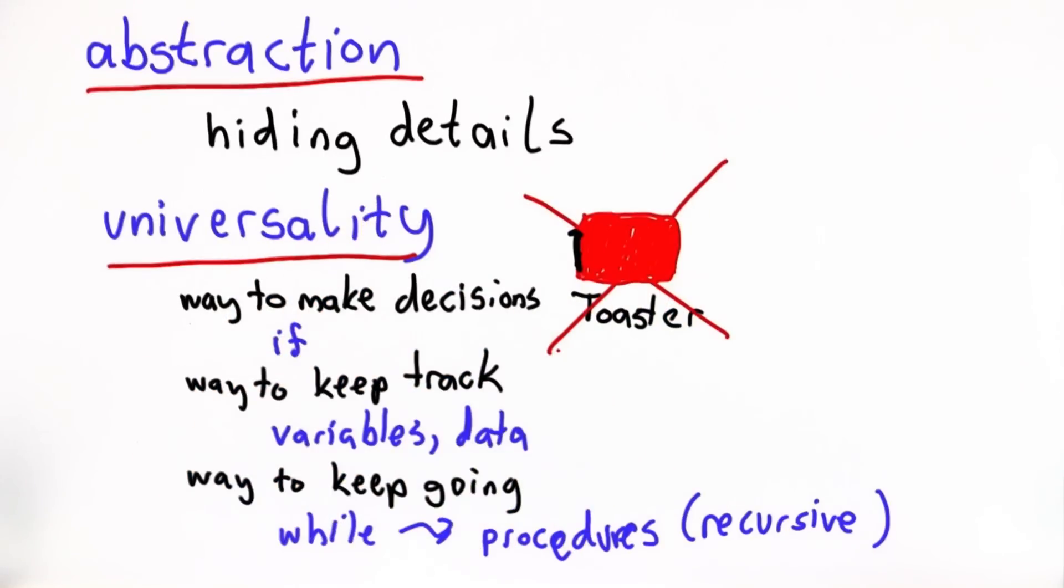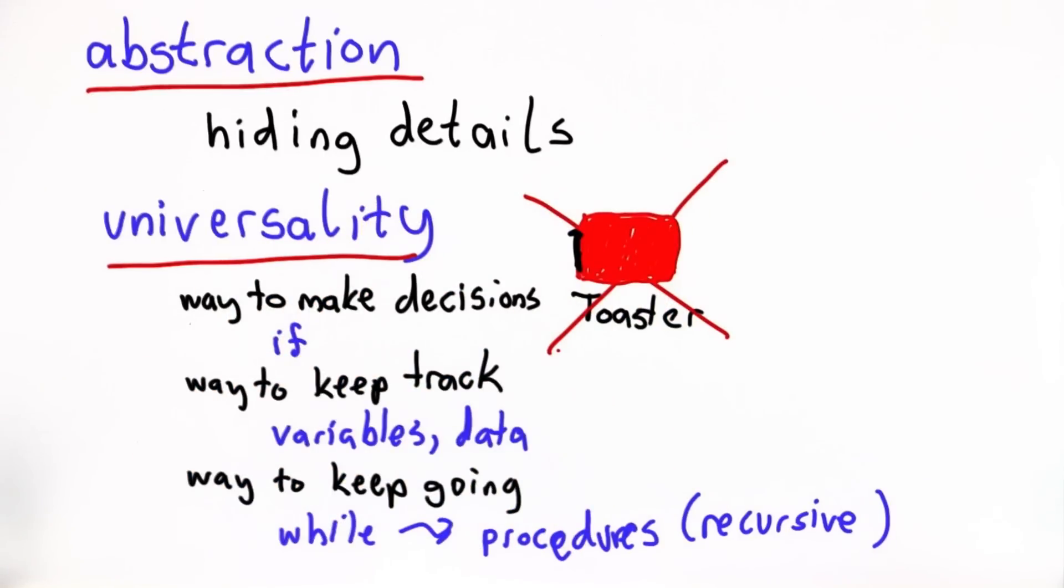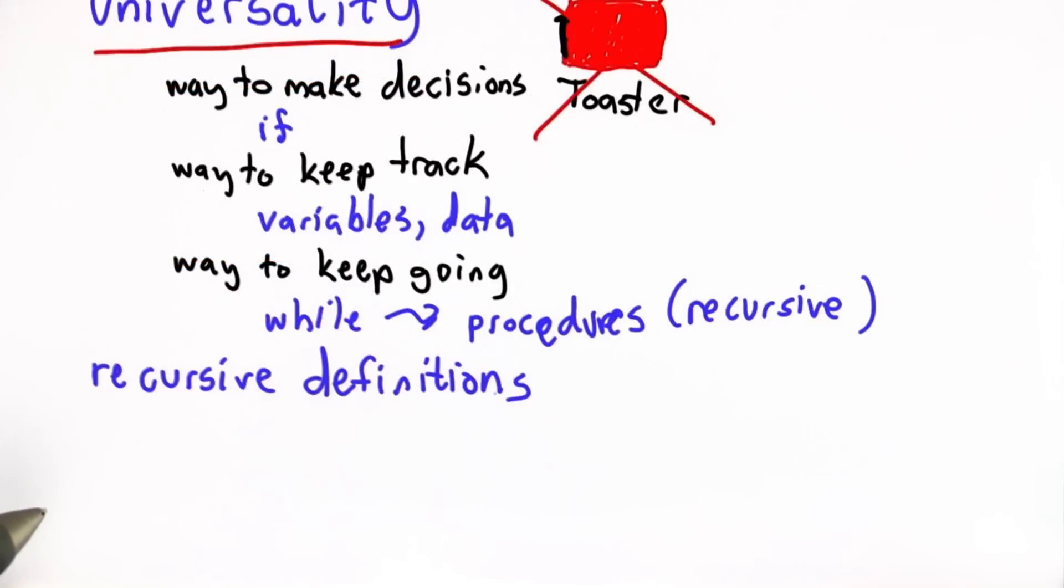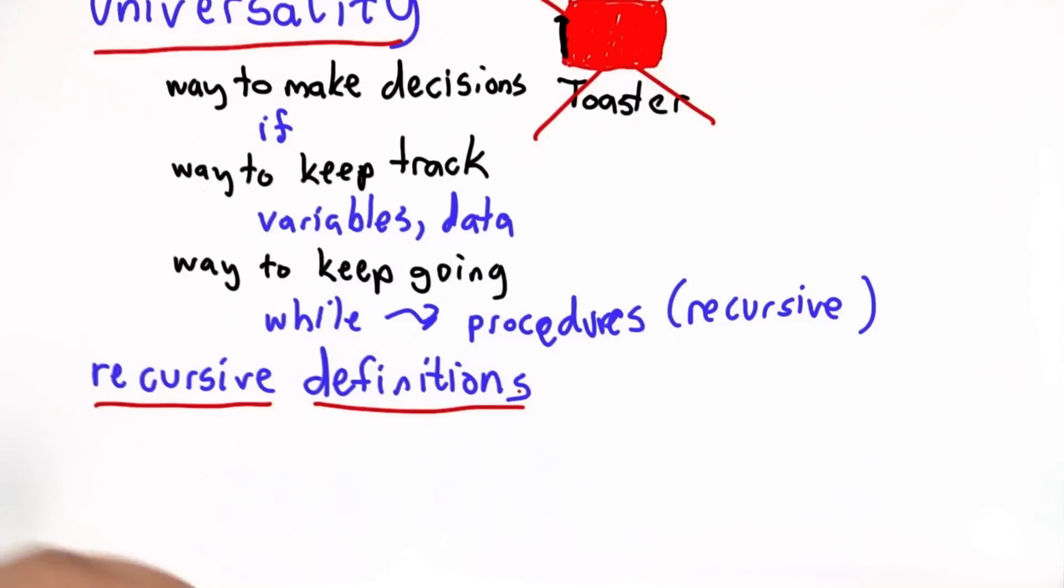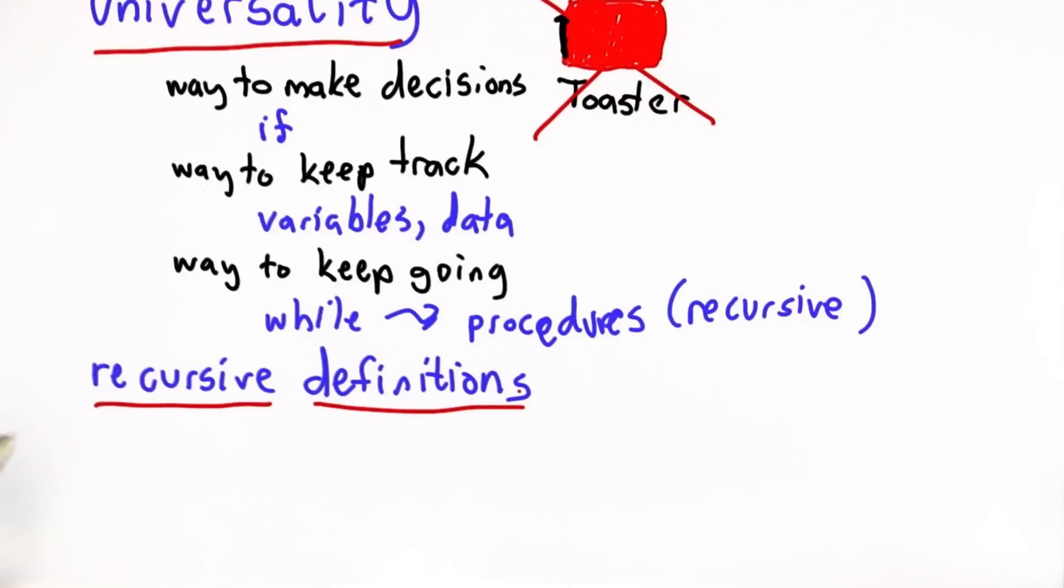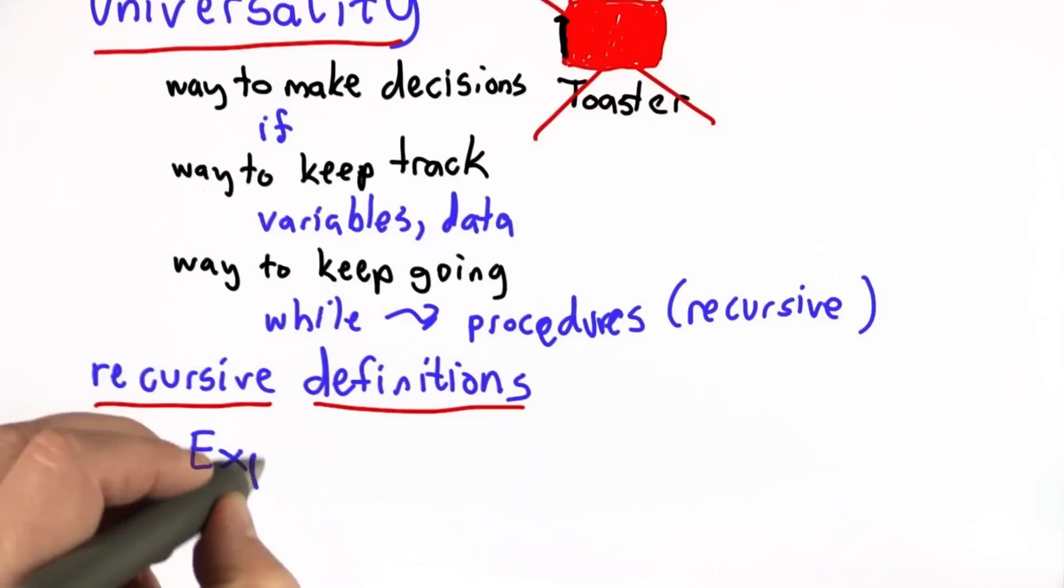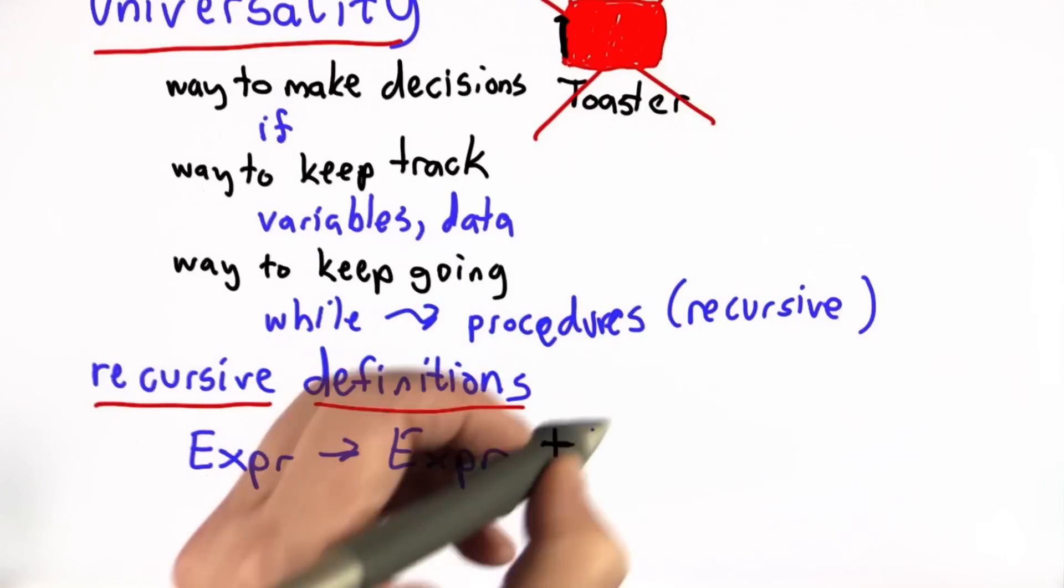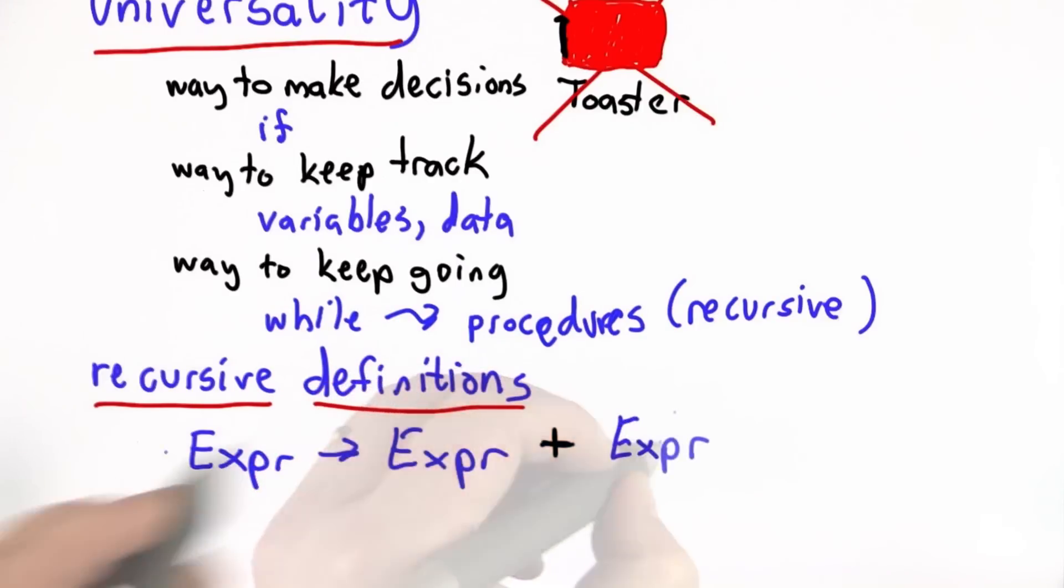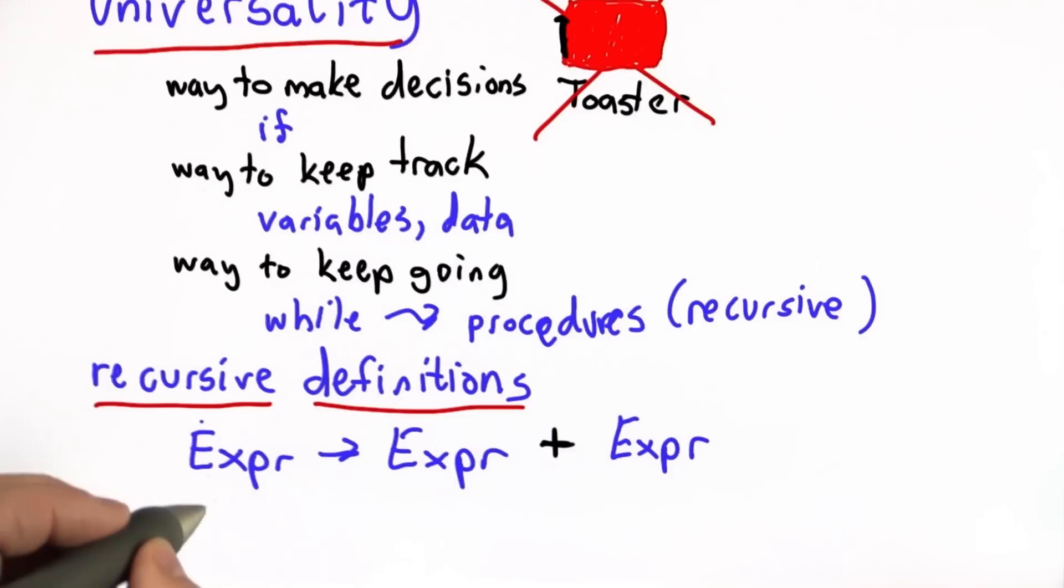The final major theme I want to summarize as our third main theme is one we've already mentioned here. It's in unit six. But you saw them many times before that. The first time you saw them was actually in unit one. We saw these rules that said we can make an expression by taking another expression, using the plus operator, and combining it with another expression. And that was not enough by itself for recursive definition.